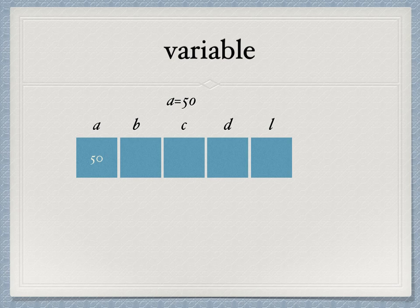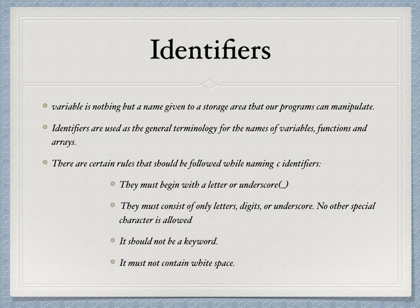A variable is actually a name given to the address where the value is stored, which makes it much more easier for the user to retrieve the data from memory instead of using the hexadecimal address. The name given to that variable we call it as identifiers.